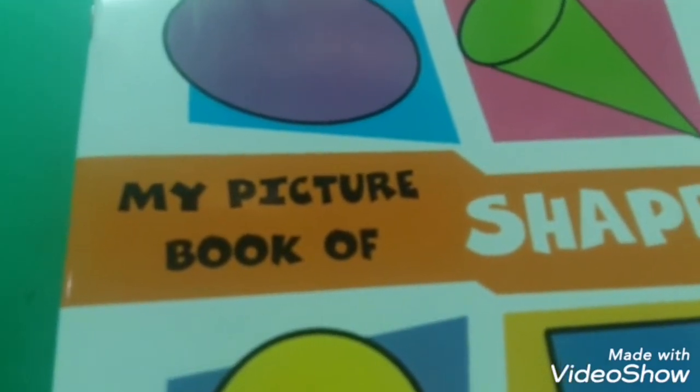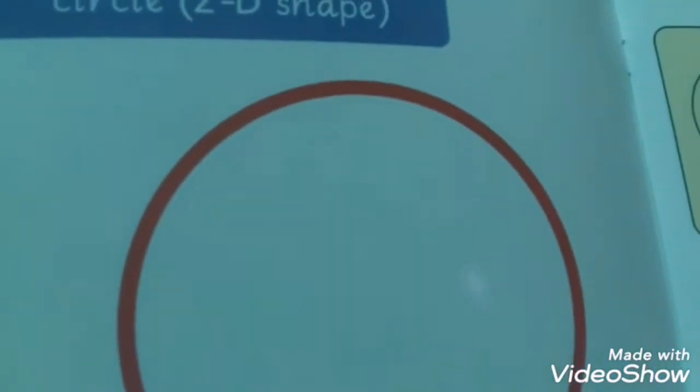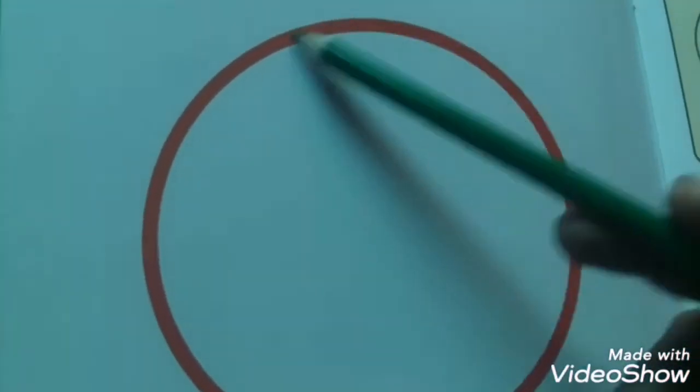Prep class, this is my picture book of shapes. Open it, page number one. Students, this is your first lecture. In page number one, this is a circle. It is in round shape. That's why we call its name is a circle shape.